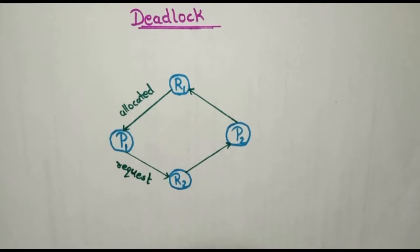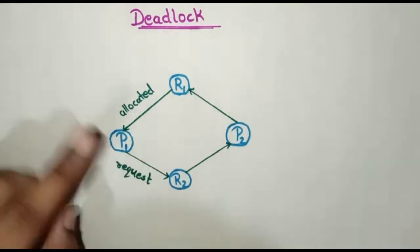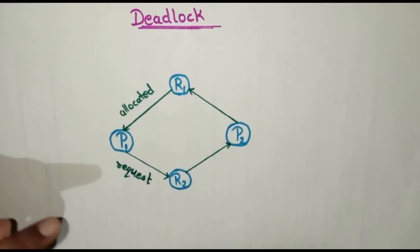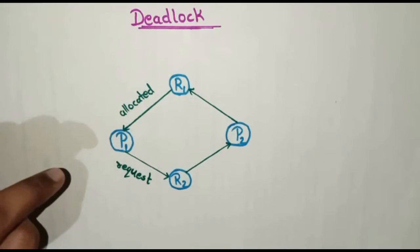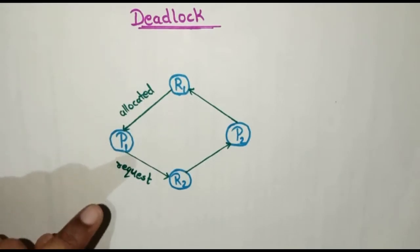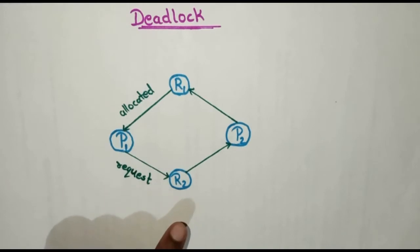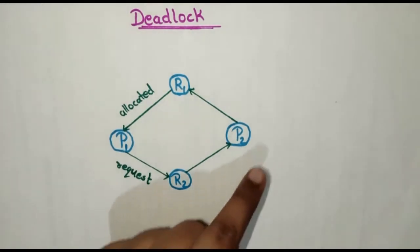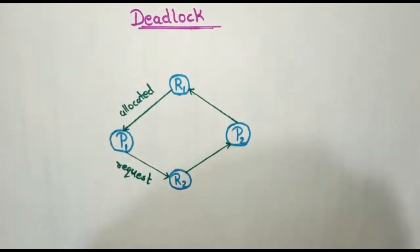Here we can see that P1 and P2 are the processes and R1 and R2 are the resources. P1 is already holding R1 and it is requesting R2. But R2 is already held by P2, and P2 is requesting R1, which is already held by P1.